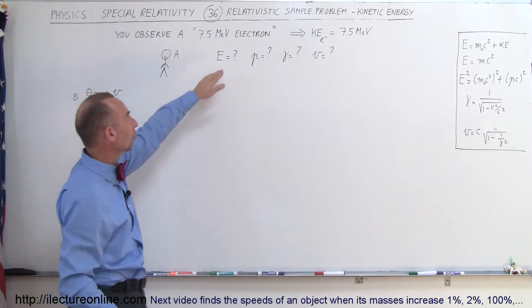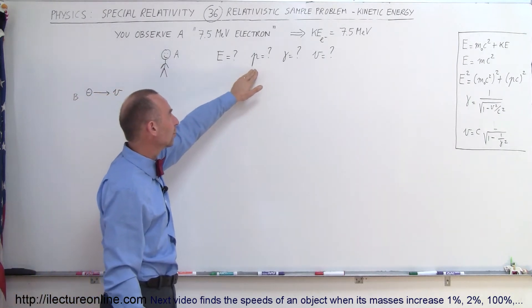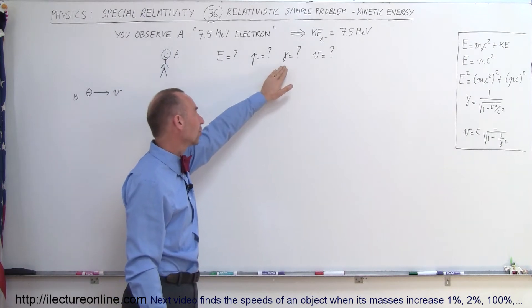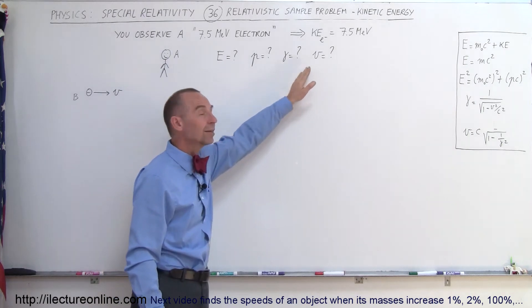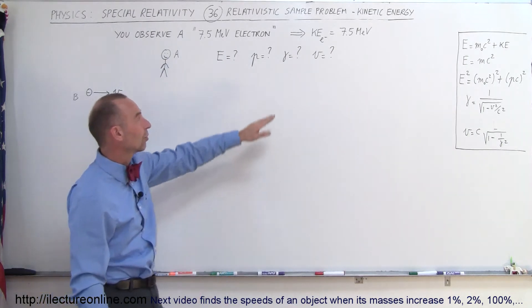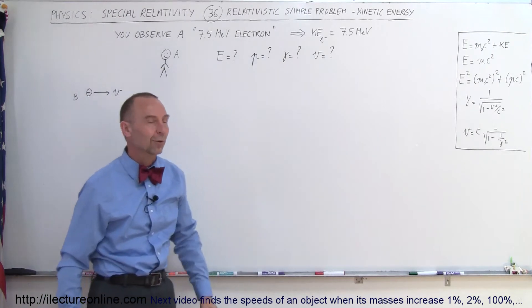You're trying to find the total energy of the electron, the momentum of the electron, the gamma associated with the electron, and the velocity of the electron. The gamma is the Lorentz factor that we're after.